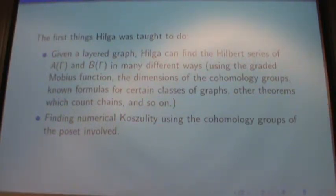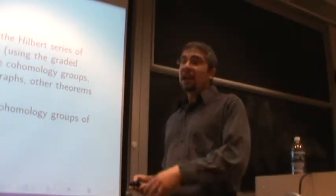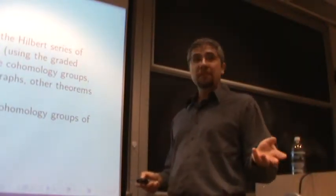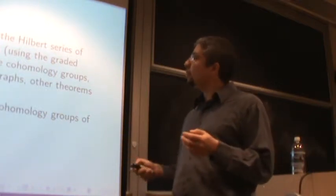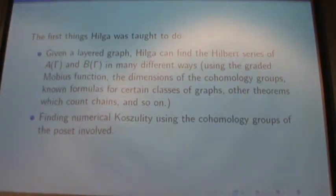But the first things Hilga was taught to do was to find the Hilbert series. And there's many different ways to do this. That Mobius function trick that I showed you guys before, that doesn't work for B gamma at all. And it only works for certain A gamma. So I pulled out all the different results, all the different ways that you can get Hilbert series for A gamma and B gamma. And I taught Hilga how to use them. And Hilga can also find numerical causality using the cohomology groups of the posets involved. And we get to Hilga's big result.